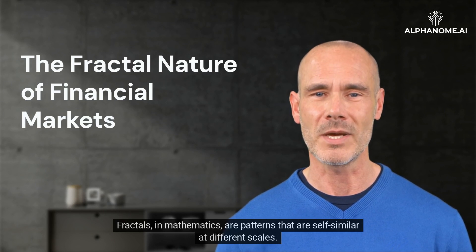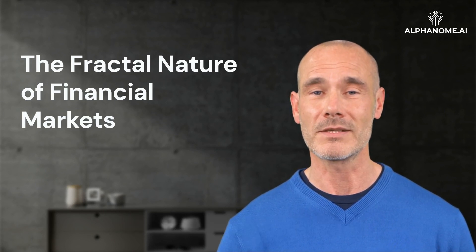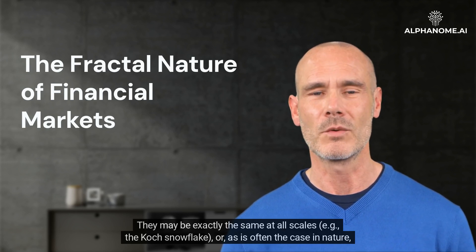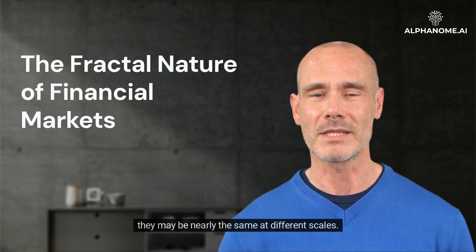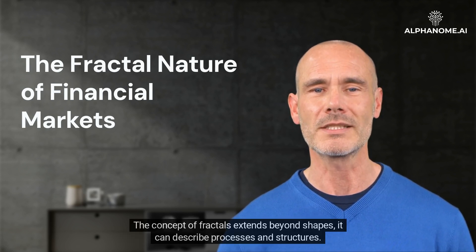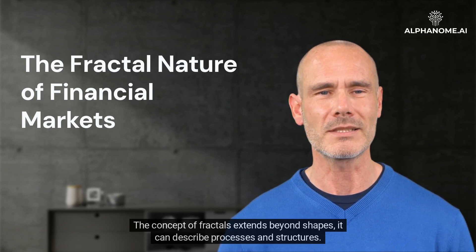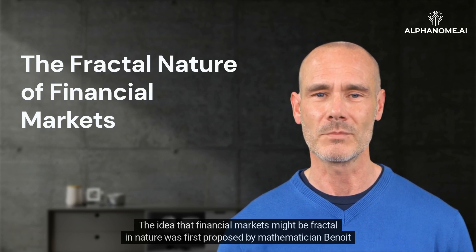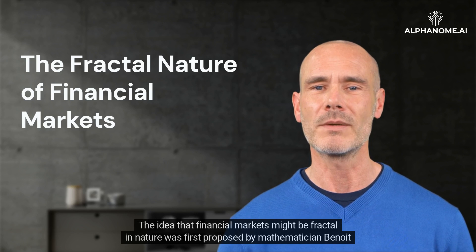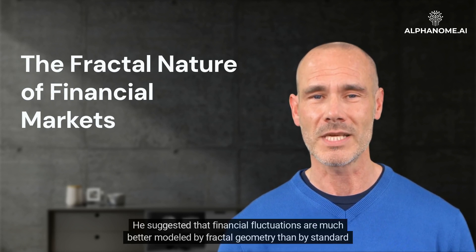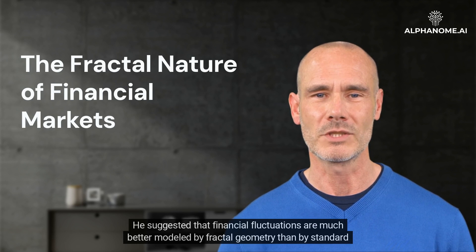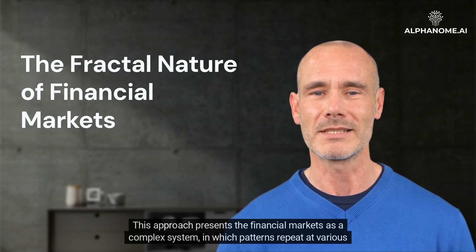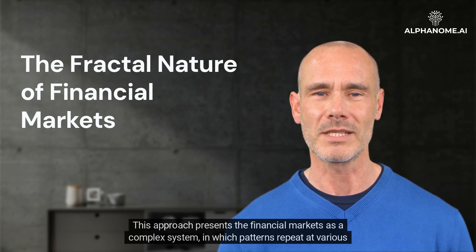Fractals, in mathematics, are patterns that are self-similar at different scales. They may be exactly the same at all scales — for example, the Koch snowflake — or, as is often the case in nature, nearly the same at different scales. The concept of fractals extends beyond shapes; it can describe processes and structures. The idea that financial markets might be fractal in nature was first proposed by mathematician Benoit Mandelbrot, who suggested that financial fluctuations are much better modeled by fractal geometry than by standard Gaussian distribution. This approach presents financial markets as a complex system in which patterns repeat at various scales.